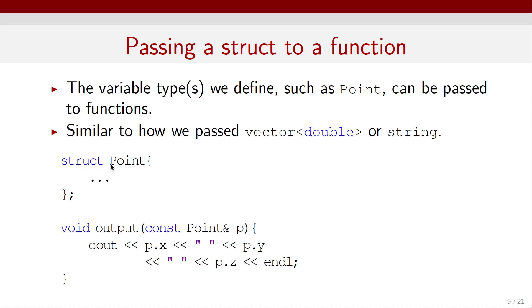The way it's done is similar to how we passed a vector or a string to a function. So here, after we've defined this structure Point, we can declare a function. That could be a void function, doesn't return anything, but it prints something to the screen. And we can call it output. And the argument could be a Point. And here we can use an ampersand to pass by reference.